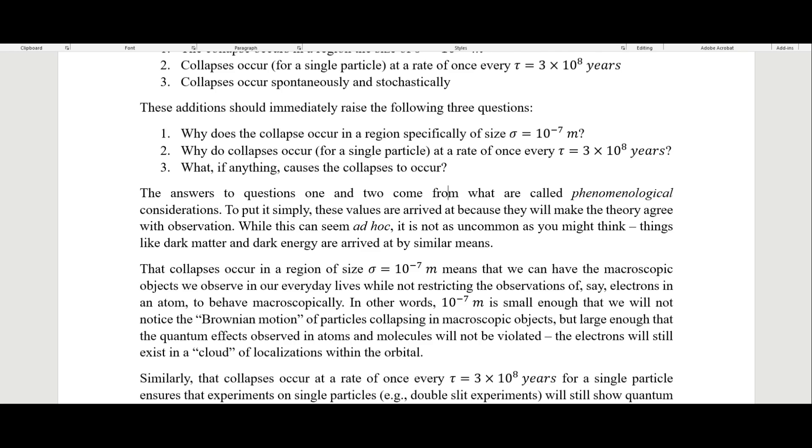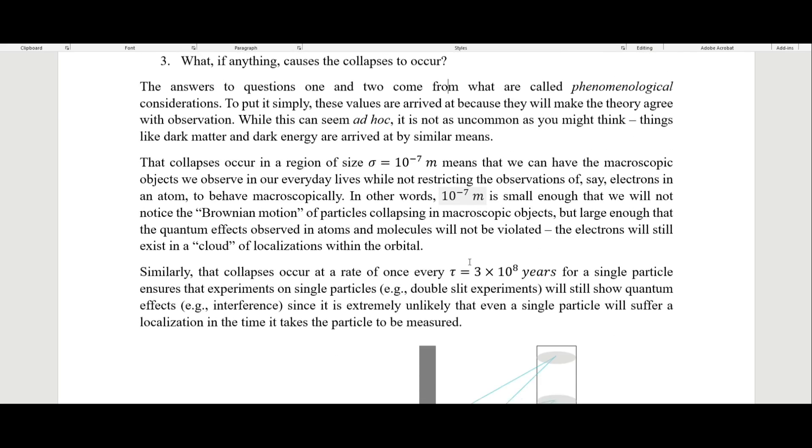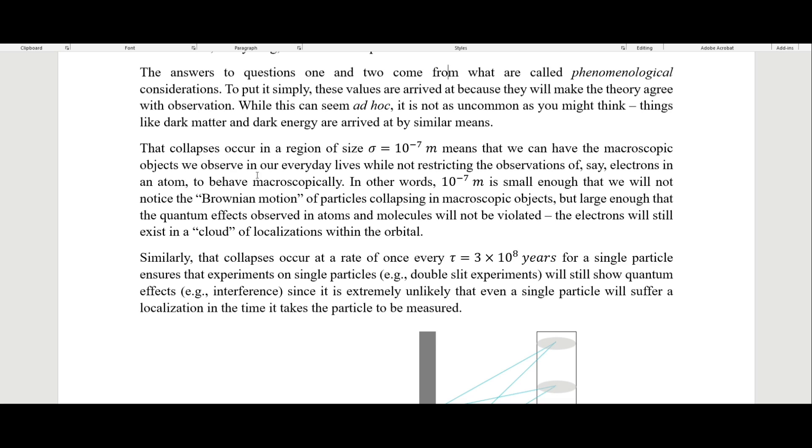That collapses occur in a region of 10^-7 meters means that we have the macroscopic objects that we observe in our everyday lives while not restricting the observations of, say, electrons in an atom to behave macroscopically. In other words, 10^-7 meters is small enough that we will not notice the Brownian motion of particles collapsing in macroscopic objects.